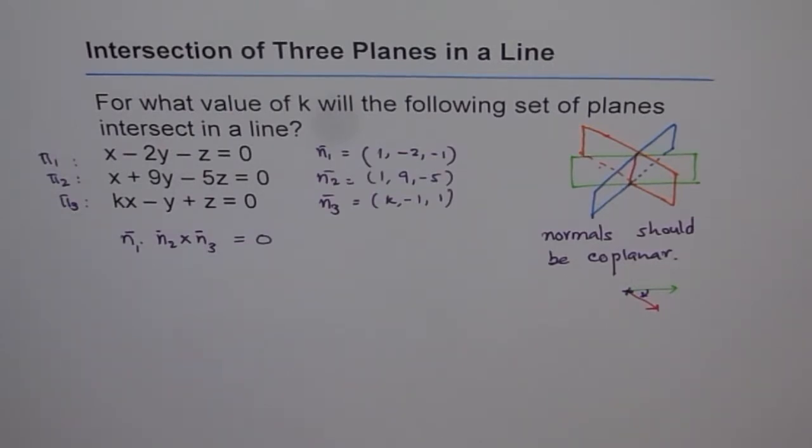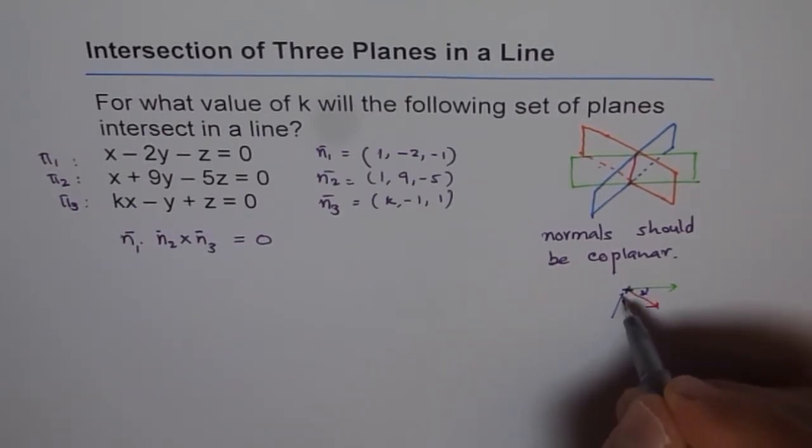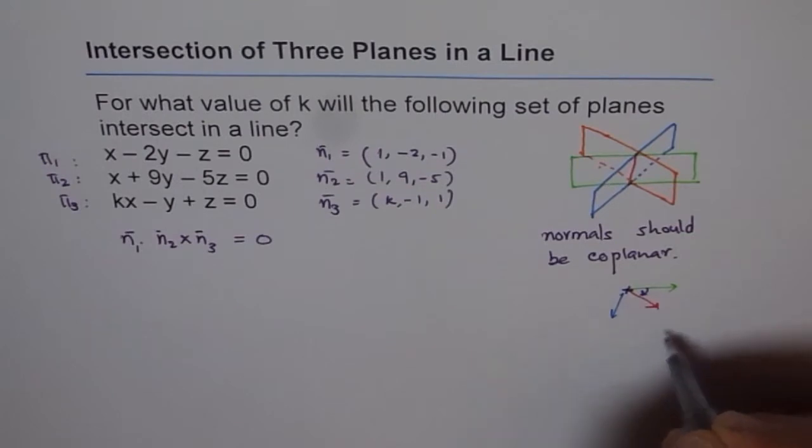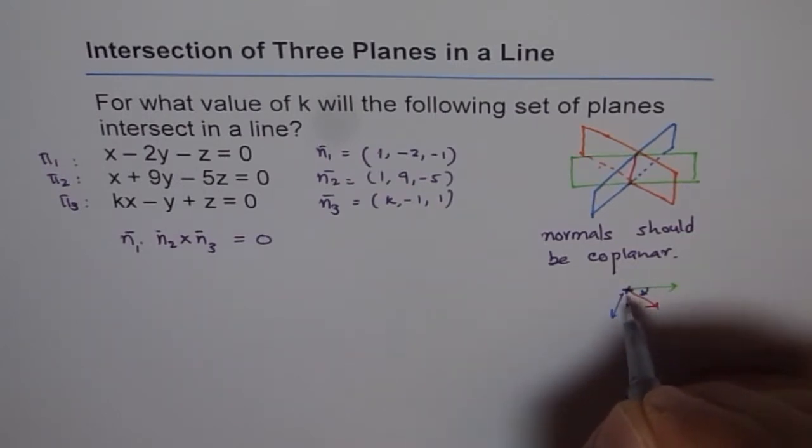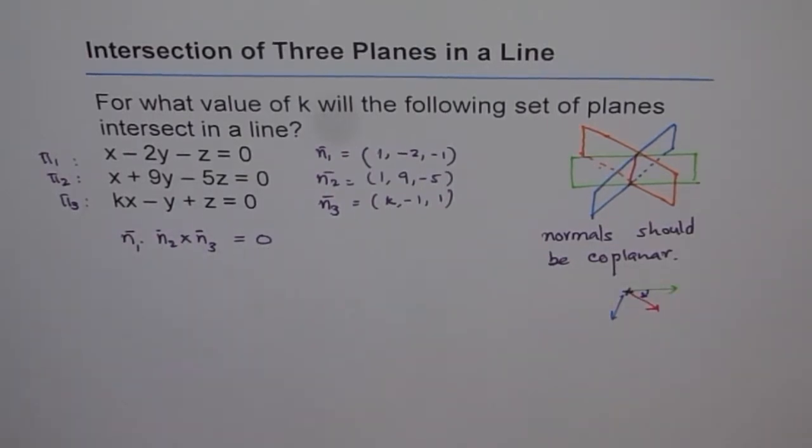And the dot product with the third, what I'm trying to say here is that my third plane, which is here, if this third plane is on the same page, then that cross product will also be perpendicular to this and therefore dot with that will be 0. So that is how we can represent and think about it. So if it is 0, only then we'll have one common line between all the three planes.